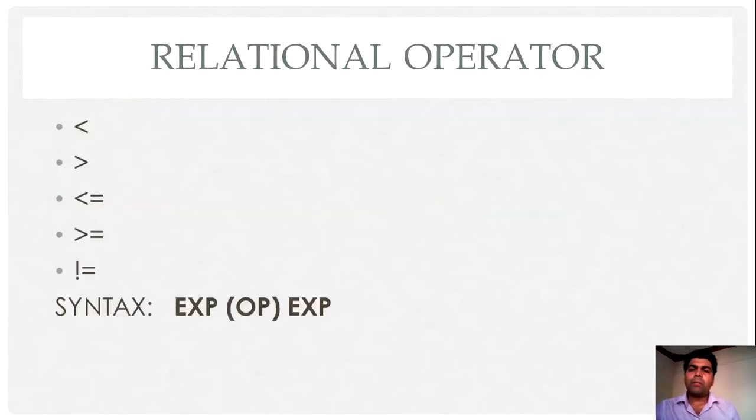Now the next category of operator is a relational operator. There are five different symbols in this relational operator: less than symbol, greater than symbol, less than or equal to symbol, greater than or equal to symbol, and not equal to symbol. This symbol has the same meaning as in mathematics you have studied already.